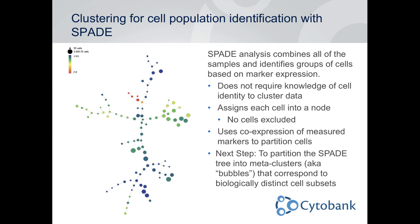SPADE assigns each cell into a particular node in the SPADE tree. Each circle is a node and every cell measured across all your samples will be in one of these nodes — so you're not missing any cells. The challenge is that there are many nodes — perhaps 200 — and there probably aren't 200 biologically distinct cell subsets. The objective is to partition this tree into meta-clusters or SPADE bubbles corresponding to biologically distinct cell subsets for further analysis.